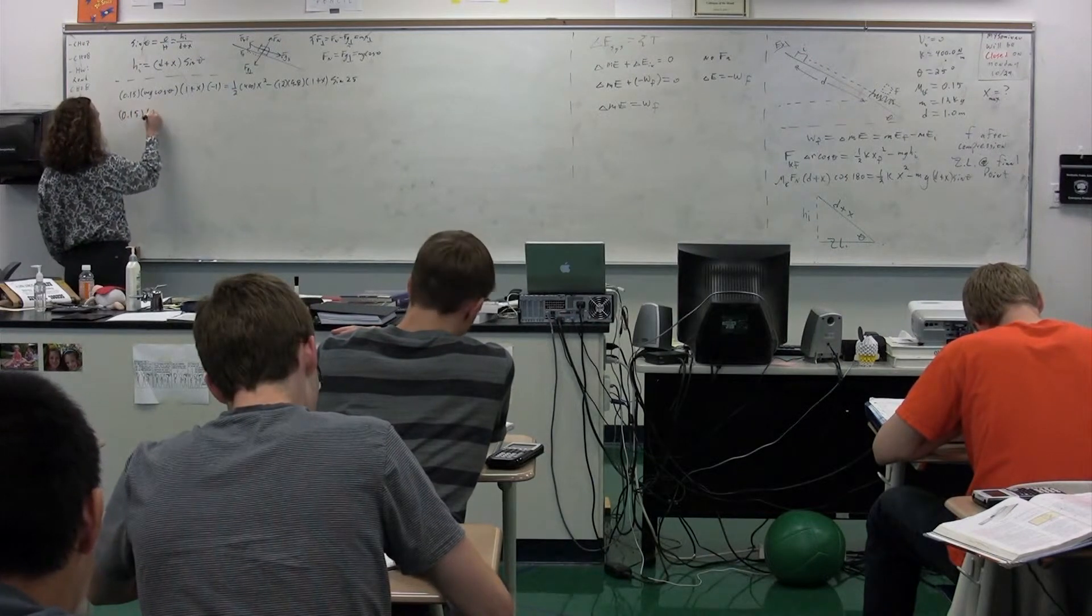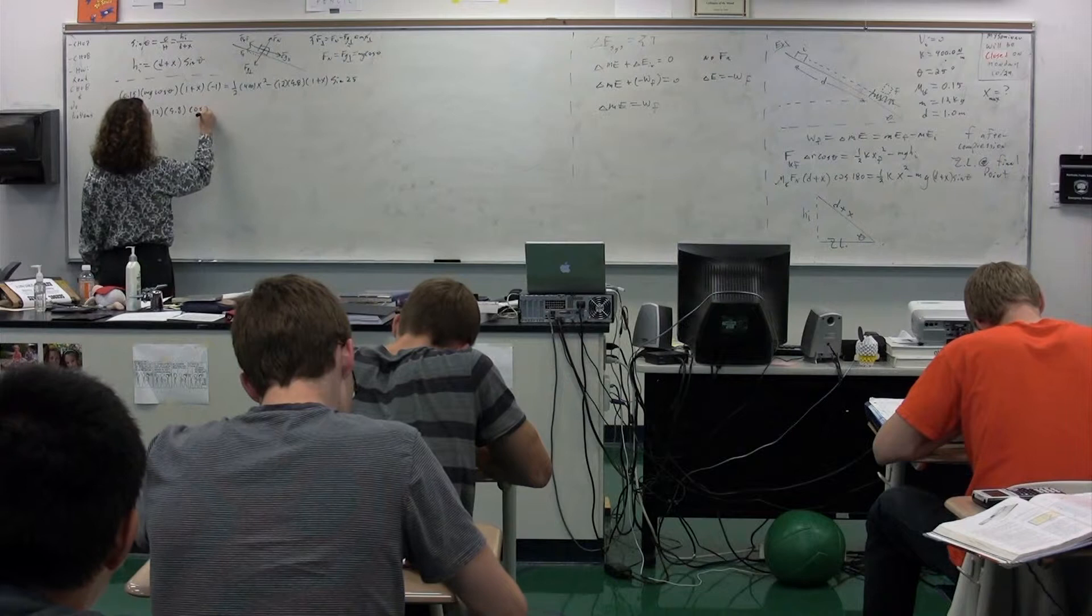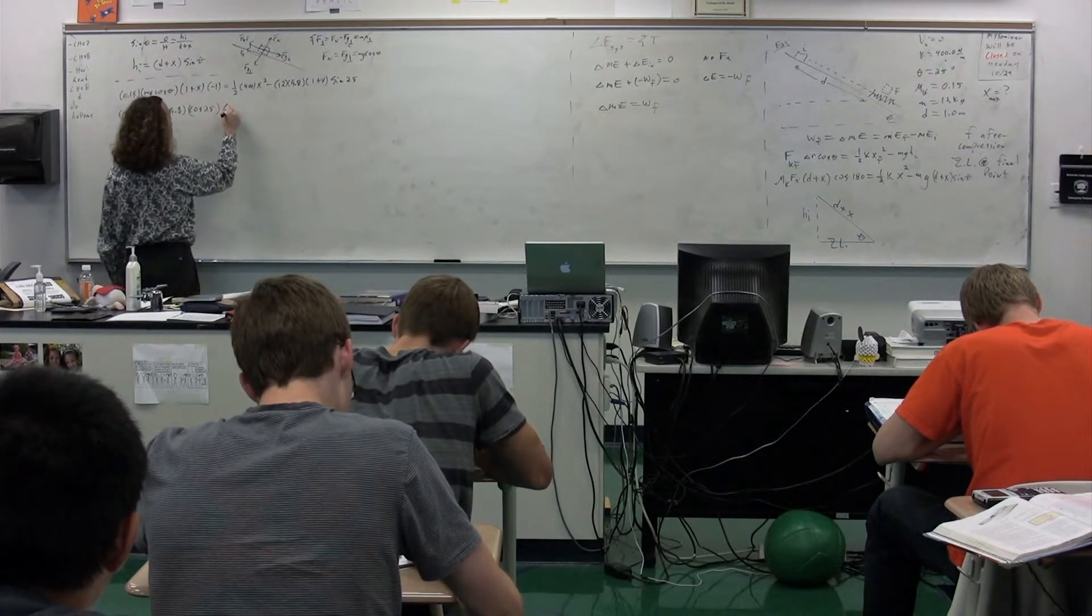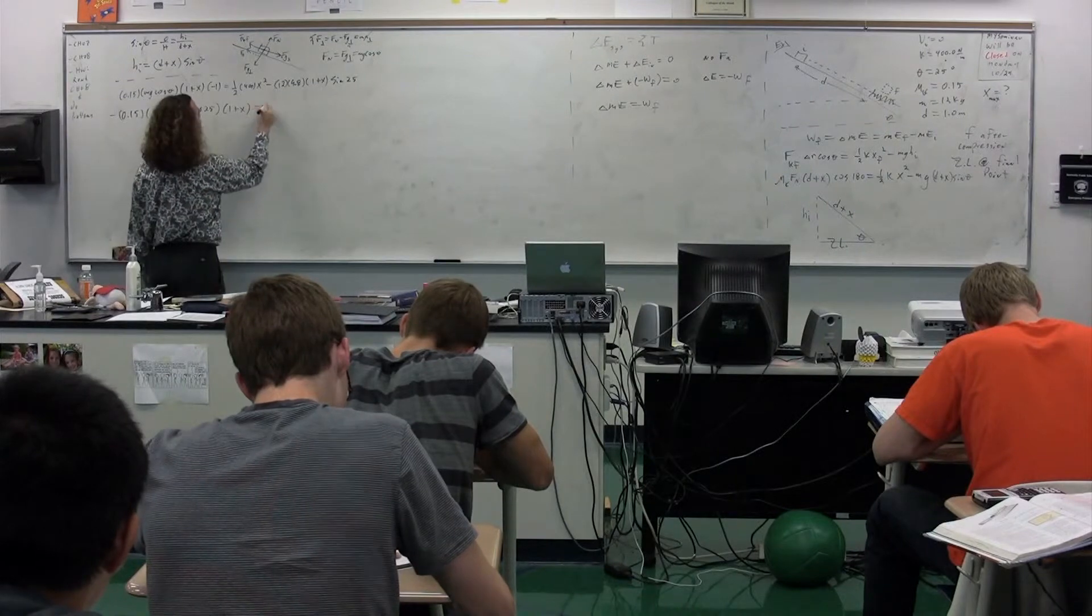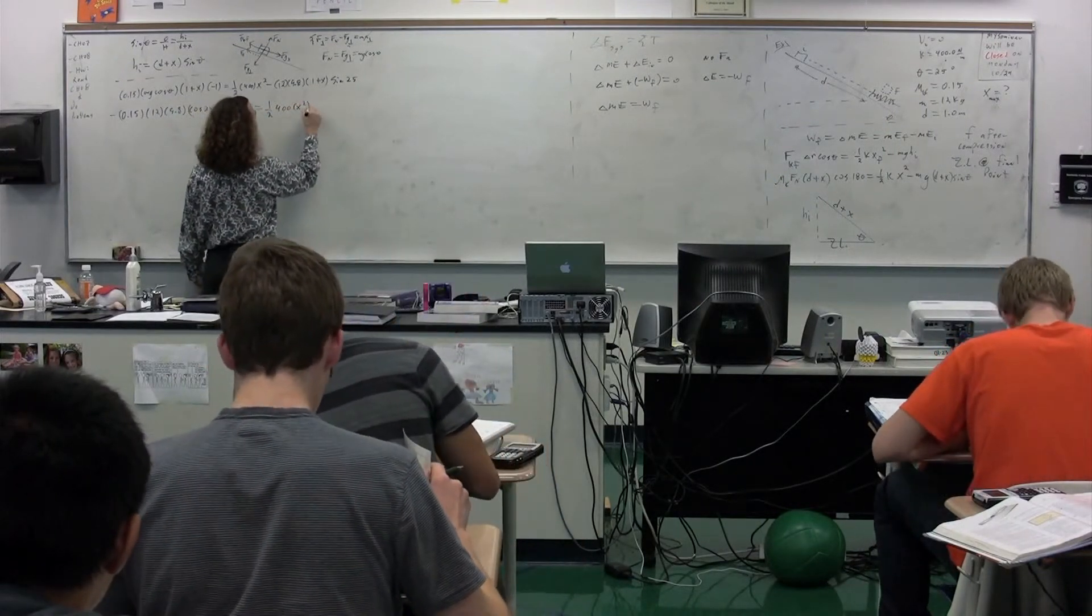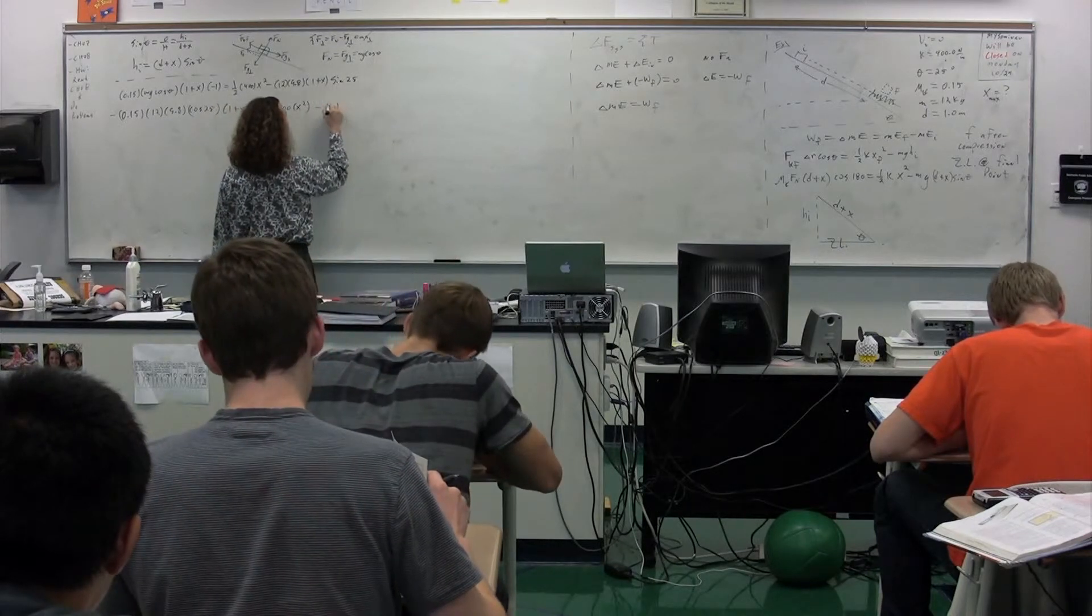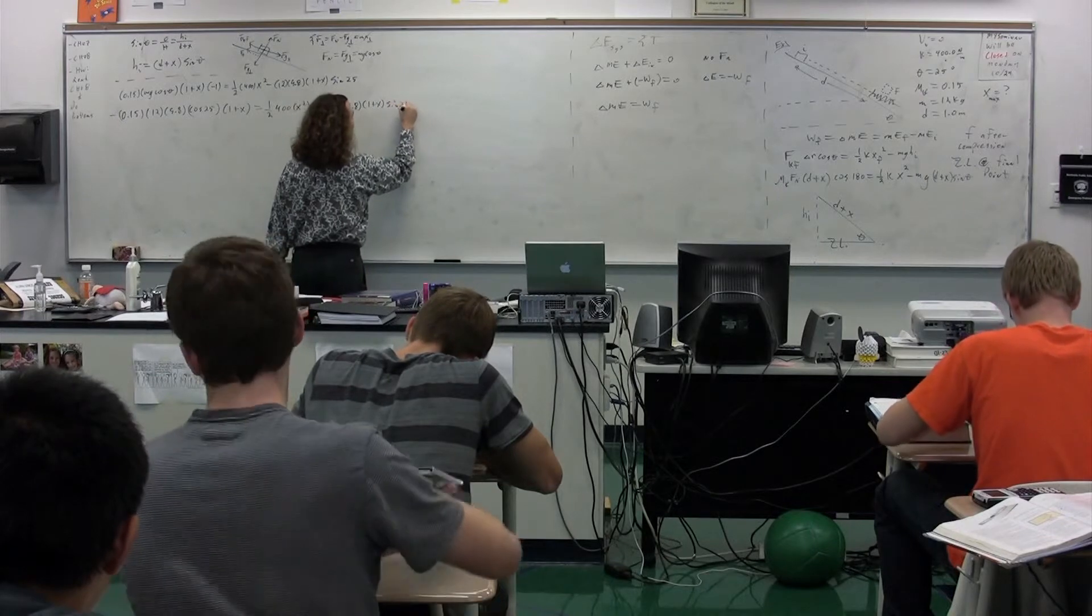0.15 times the mass, which was 12. Times g, which is 9.8. Times the cosine of 25. Times 1 plus x. We'll put a negative in front. Is equal to 1 half times 400 x squared minus 12 times 9.8 times 1 plus x times the sine of 25.